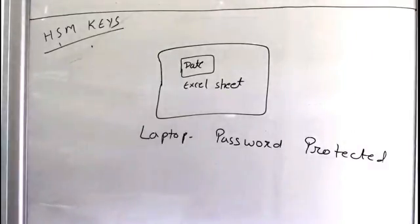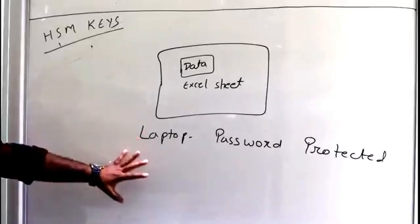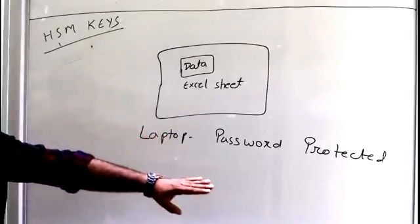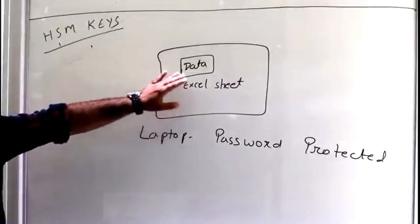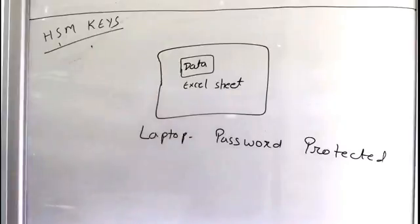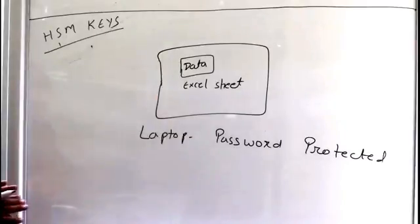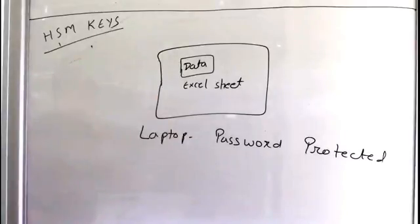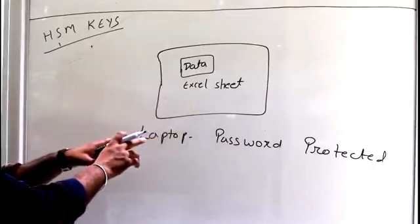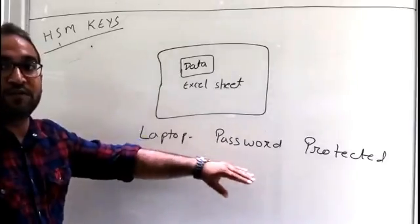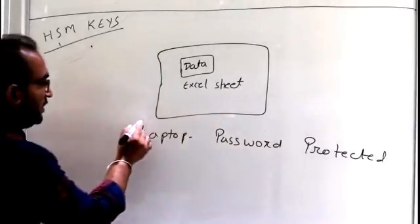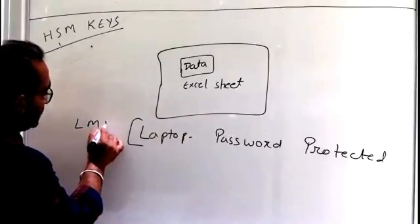Now I'll give you an example to easily understand this concept — how LMK is used, how ZMK is used, and how the other keys protect the data. Let's assume this is a laptop and it is password protected. Inside the laptop you have an Excel sheet with some data. Think of this laptop as a box, and the box has one master key which is the password — that is the Local Master Key.